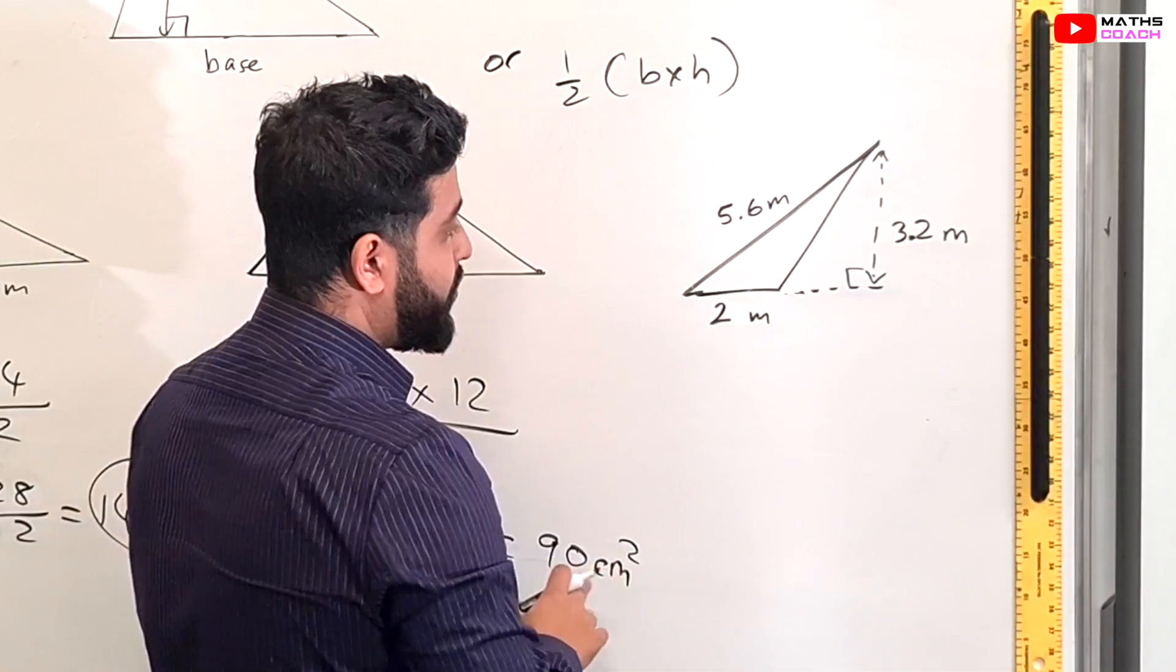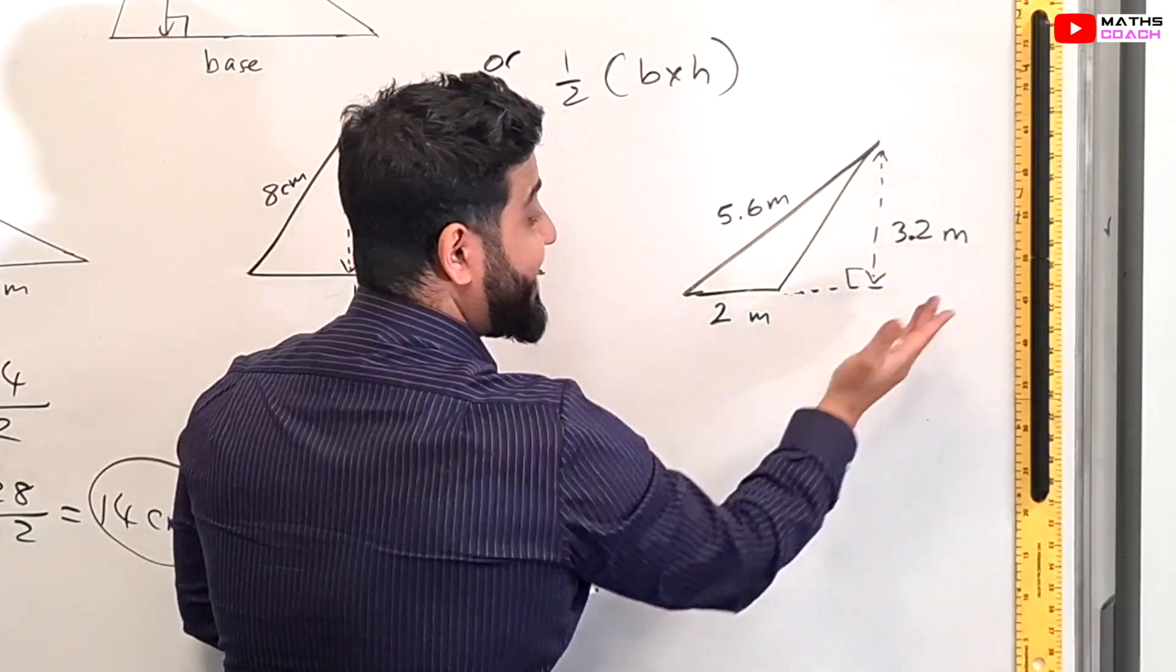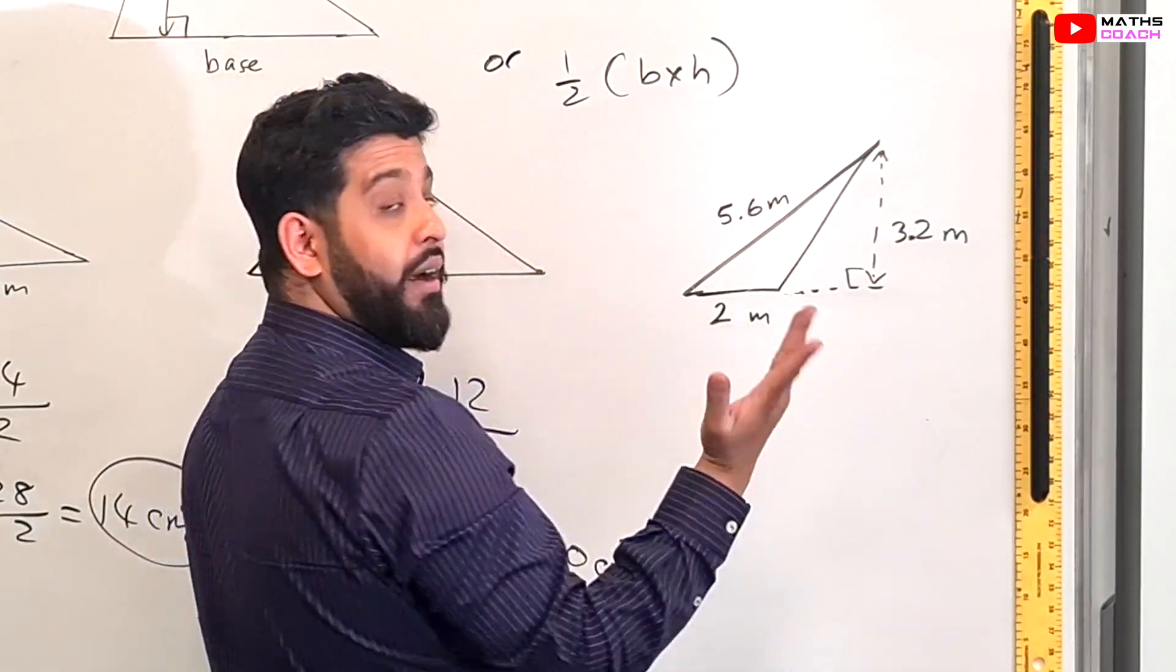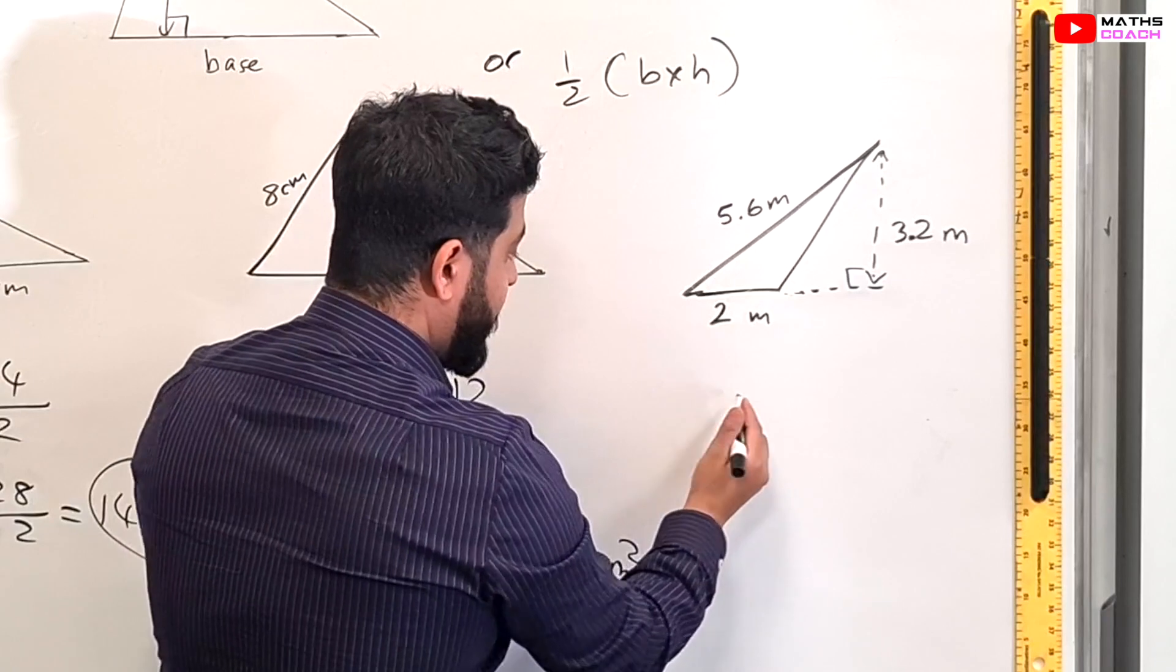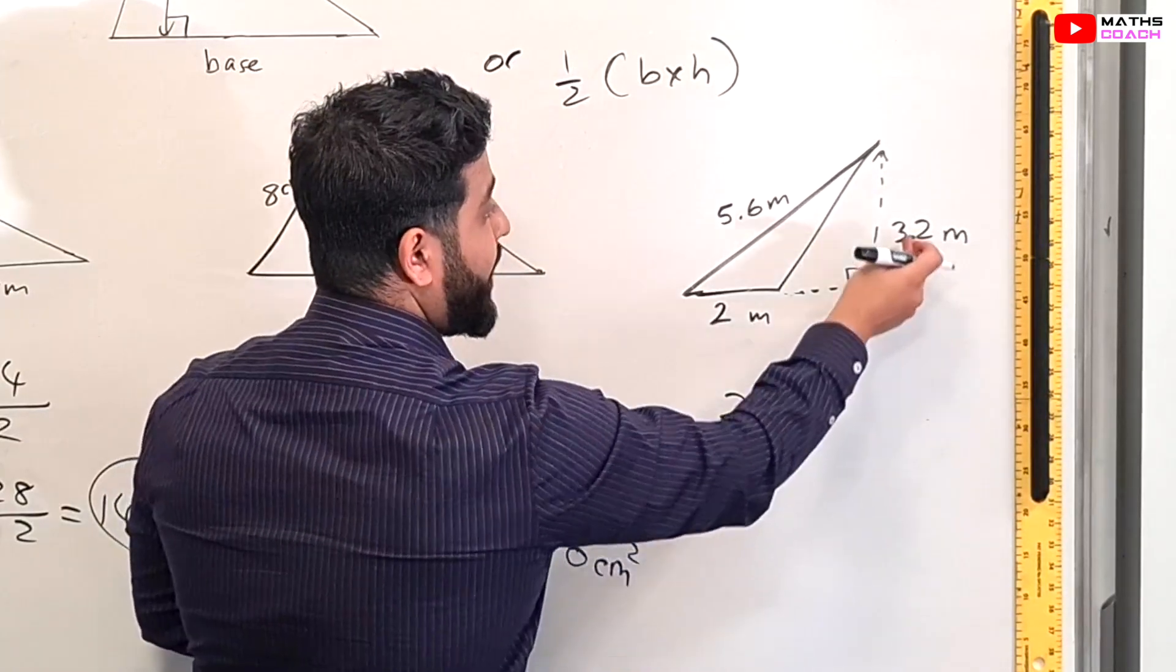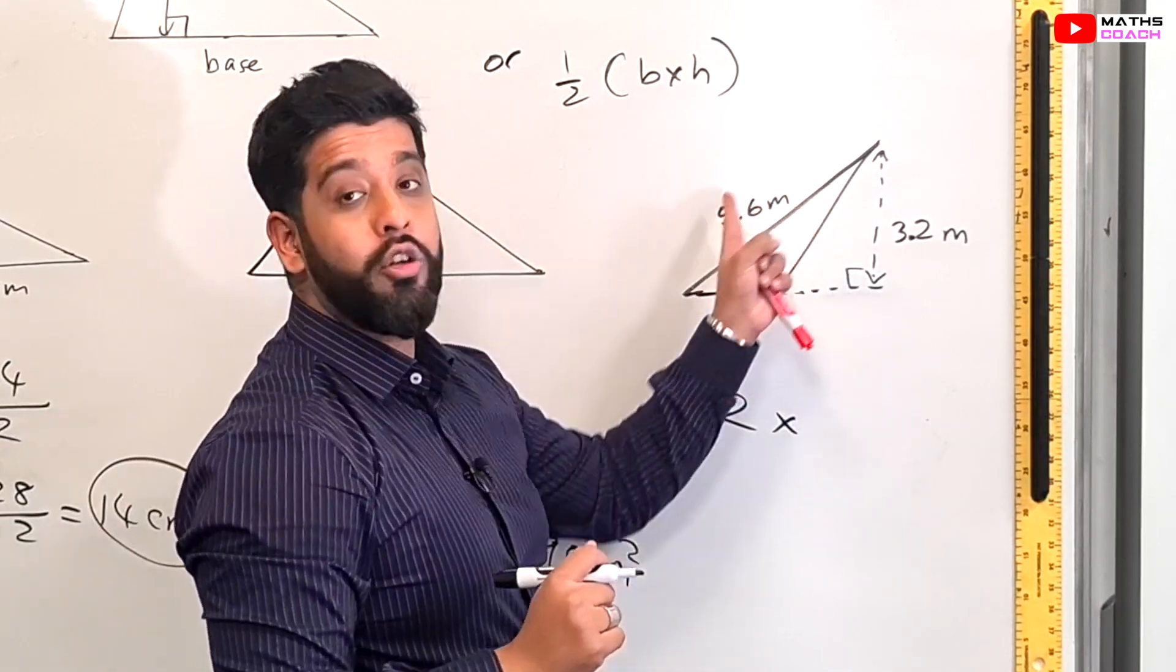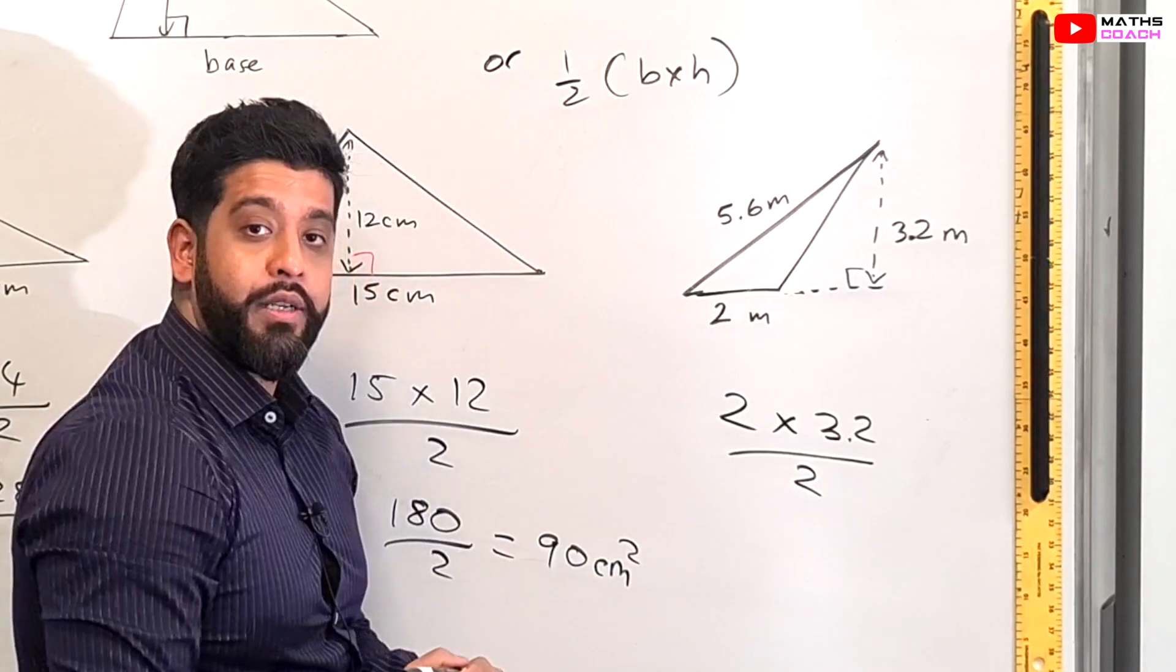On to this final one here. You'll notice that the height of this triangle is given outside of the shape. So it's still the height because it makes a 90 degree with the base. The base is 2 centimeters and the height is 3.2 not 5.6 not this. This is not the height. This is okay. So 2 times 3.2 and then divide that by 2.